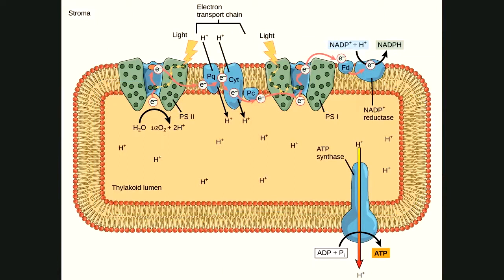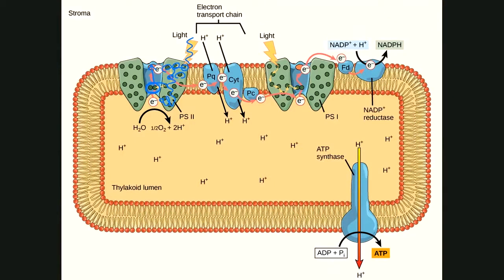Sunlight comes in and these chlorophyll pigments are able to absorb certain wavelengths of light. They absorb those wavelengths and shuttle or concentrate the energy to the reaction center. In the photosystem, that energy is then transferred to a pair of electrons, which go up in energy level — they're gaining energy essentially from sunlight.